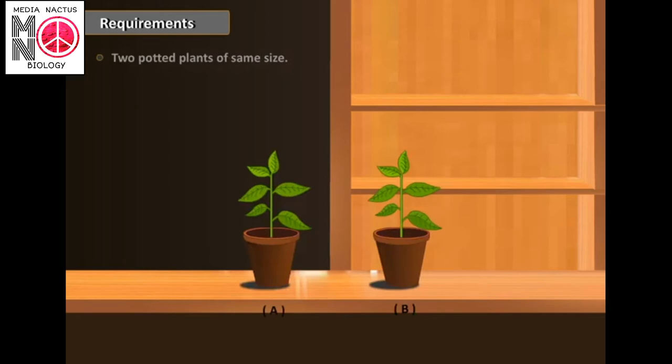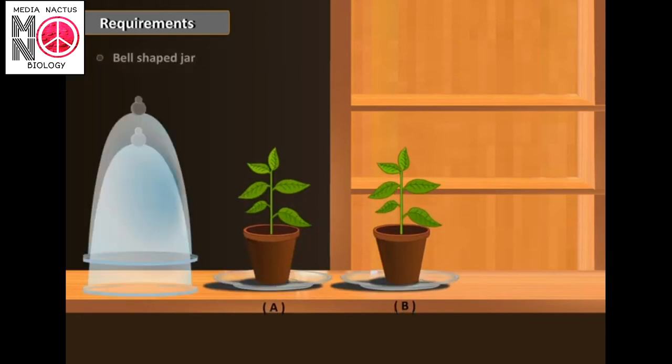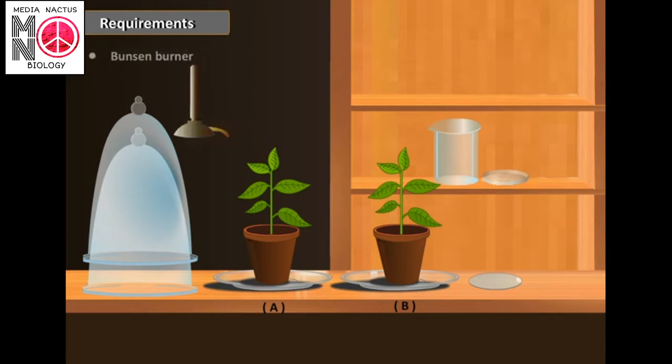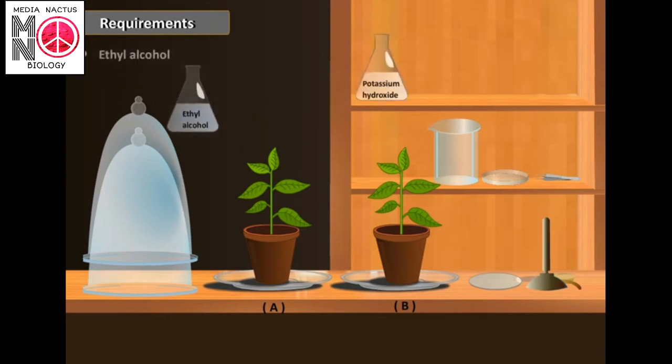What is the role of carbon dioxide, or how can we confirm that carbon dioxide is essential for photosynthesis? We can demonstrate this with a short experiment. Requirements for the next activity: two potted plants of the same size, glass plate, bell-shaped jar, watch glass, beaker, petri dish, burner, forceps, dropper, potassium hydroxide solution, iodine, alcohol, and water.